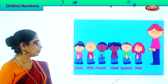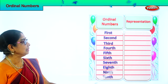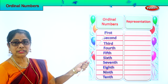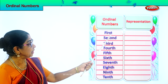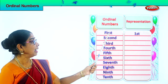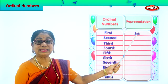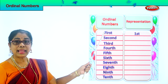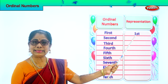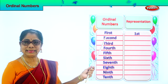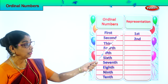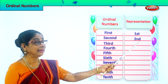Now let's learn ordinal numbers. What is the first one here? Look at the spelling: F-I-R-S-T. First. How do you write first? You write number one and the short form S-T — you read this as first. You put 1 and S-T next to it: 1st. This is second. Spell second: S-E-C-O-N-D. How do you represent second? You write 2 and write N-D next to it: 2nd.